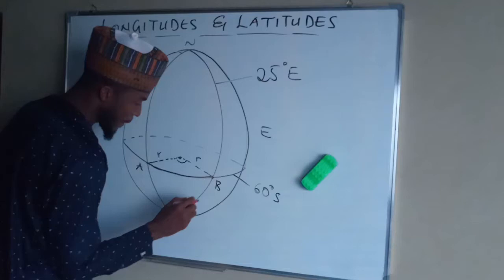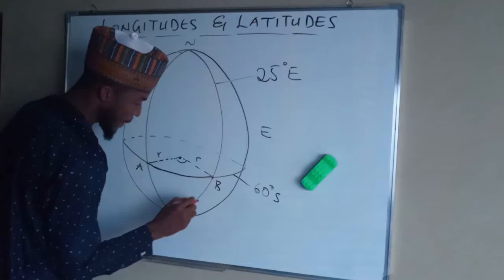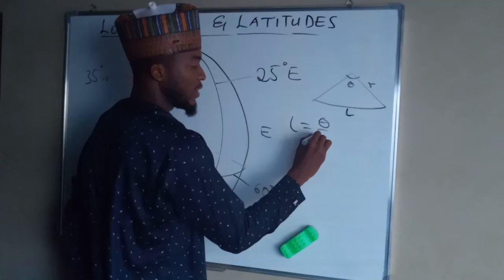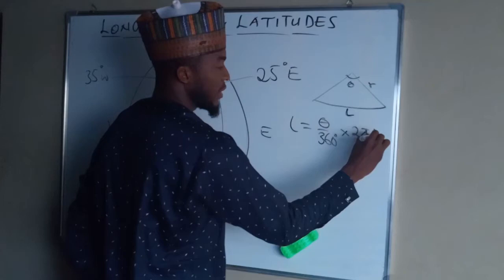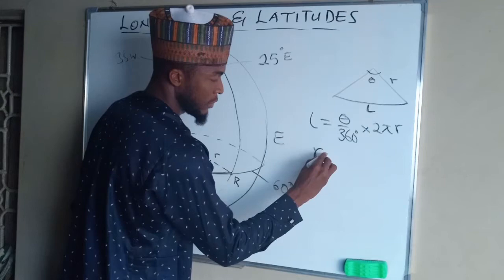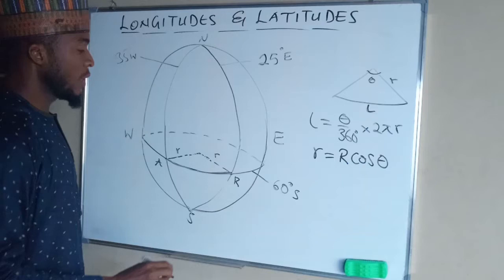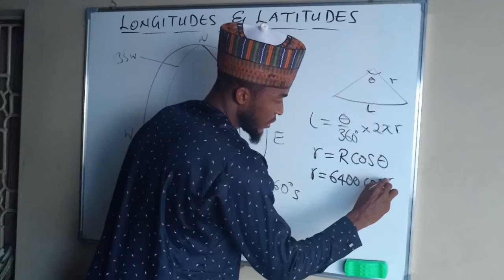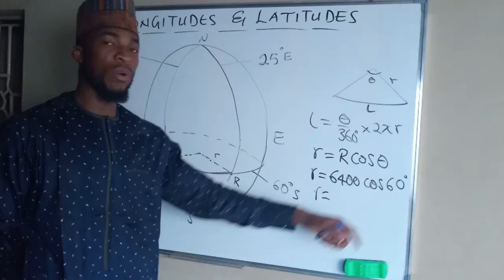If you want to find the distance between these two towns A and B, it is just an arc of a circle with angle θ and radius r. The arc length L is calculated as: L = (θ / 360°) × 2πr. And small r equals capital R cos θ, where θ is the common latitude of 60 degrees. So r = 6400 × cos 60° = 6400 × (1/2) = 3200 kilometers. So the radius of this parallel of latitude is 3200 kilometers.